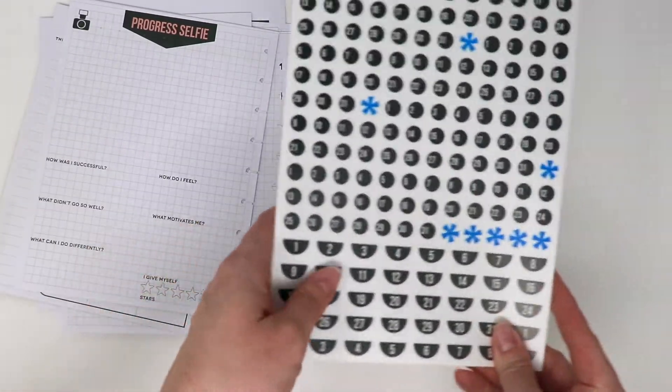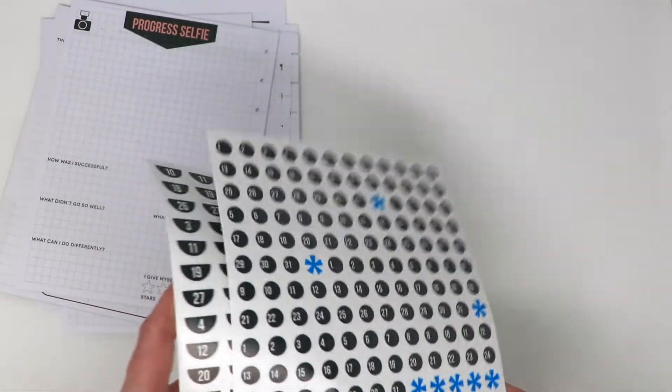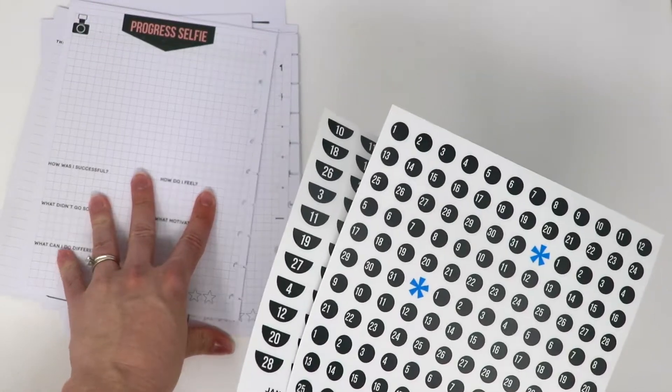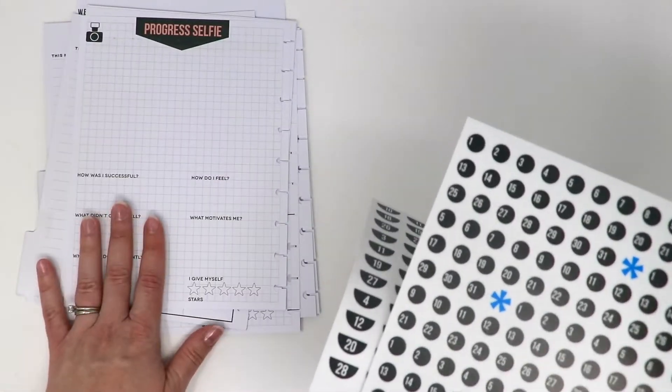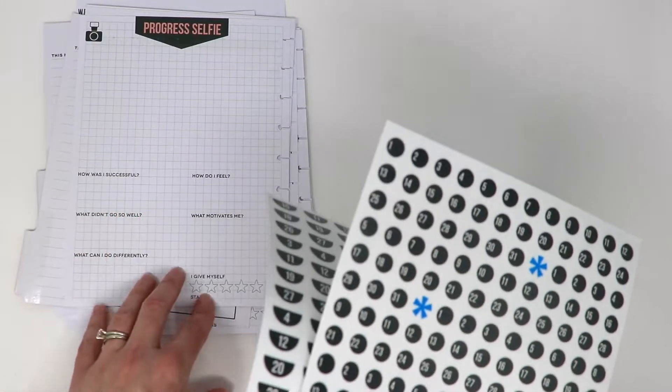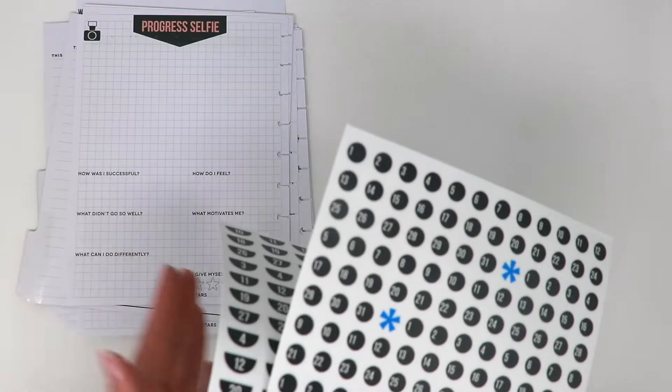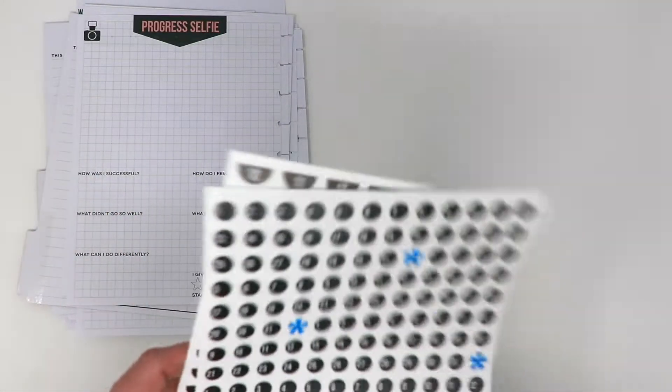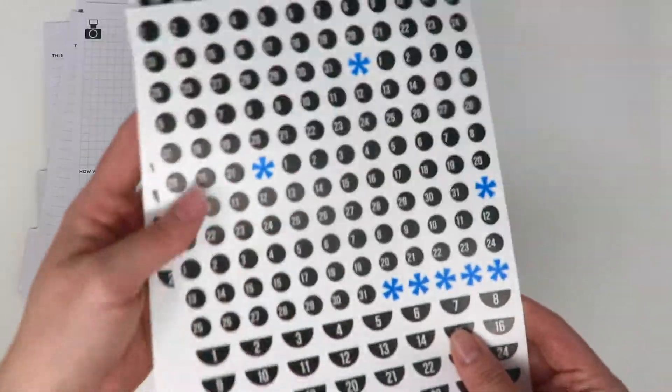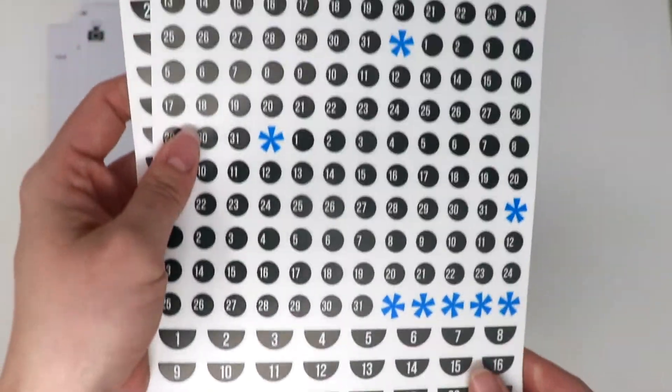And then back here they give you these stickers. These pages have not been dated, which is wonderful because that means that no matter what time of the year you get this, you're not going to be wasting any months because you've passed it. So that's great news, and they give you the stickers here so that you can label your planner.